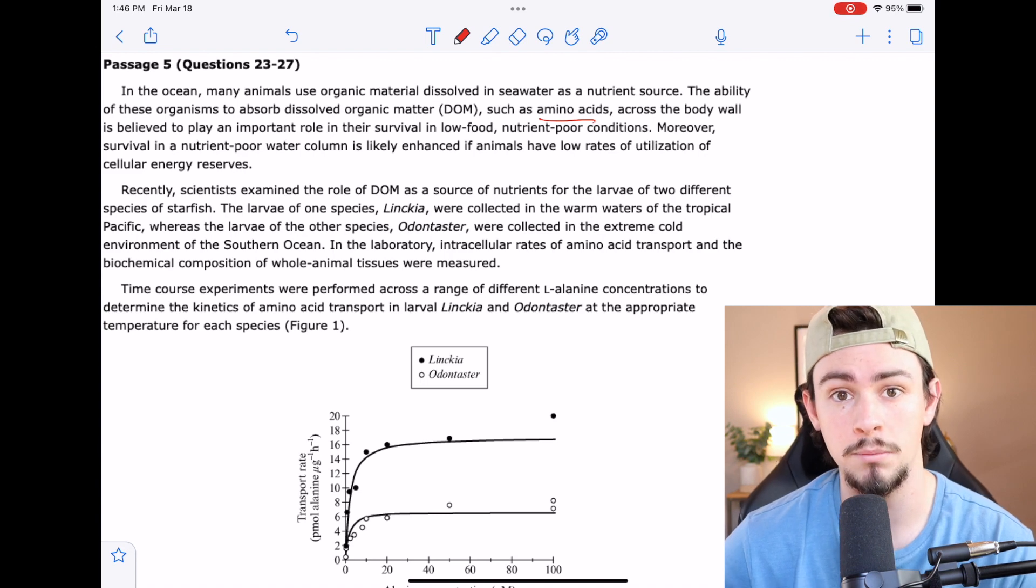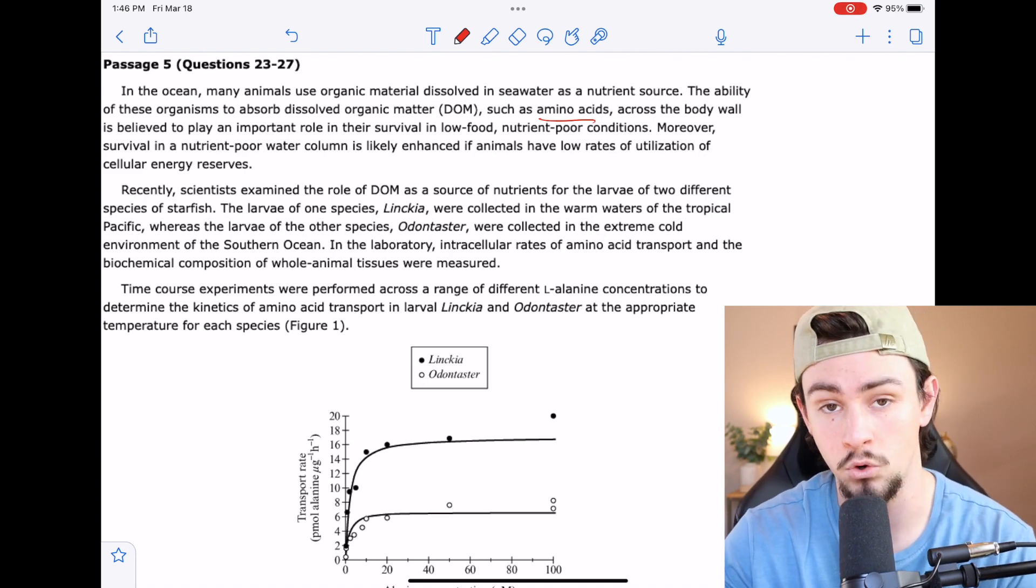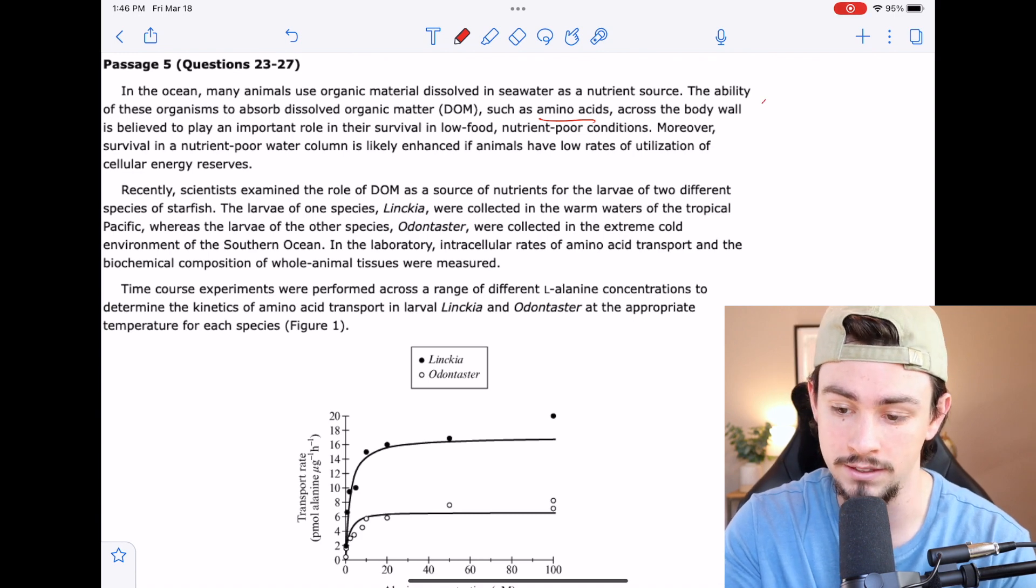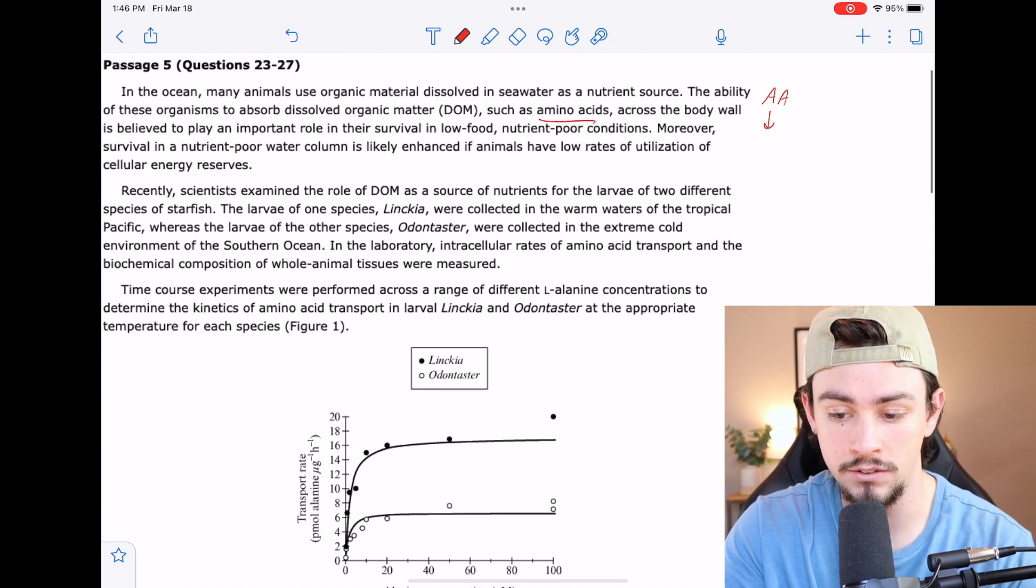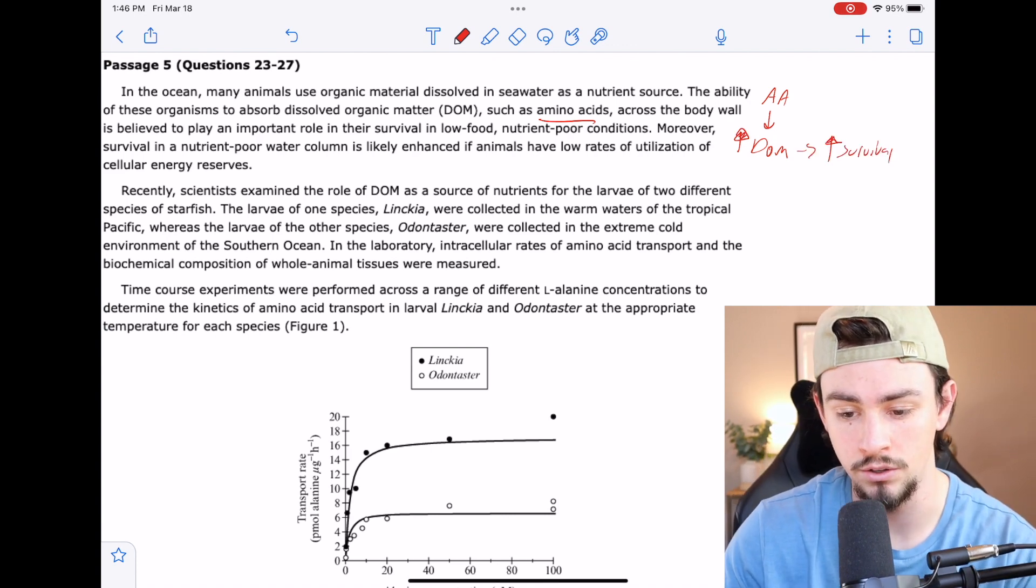Okay, so so far they're talking about how these animals survive, and they do that by absorbing DOM, which has amino acids in it. So for my flow chart, I'm going to say amino acids are contained in DOM, and increased absorption of DOM leads to increased survival, especially in nutrient-low conditions.